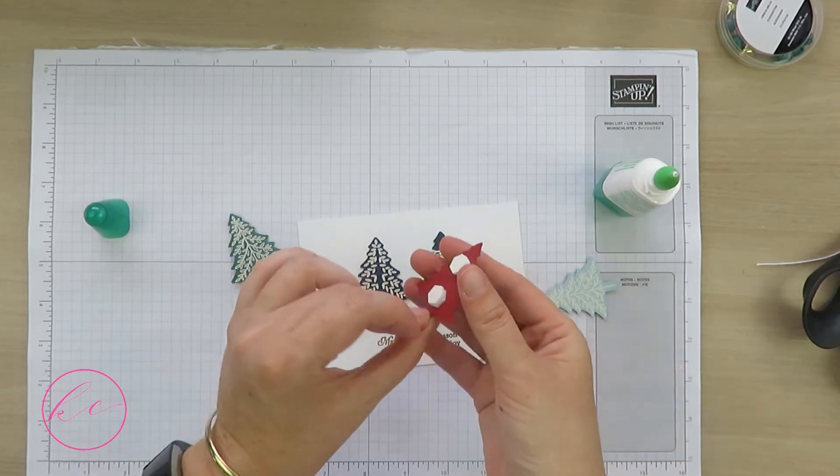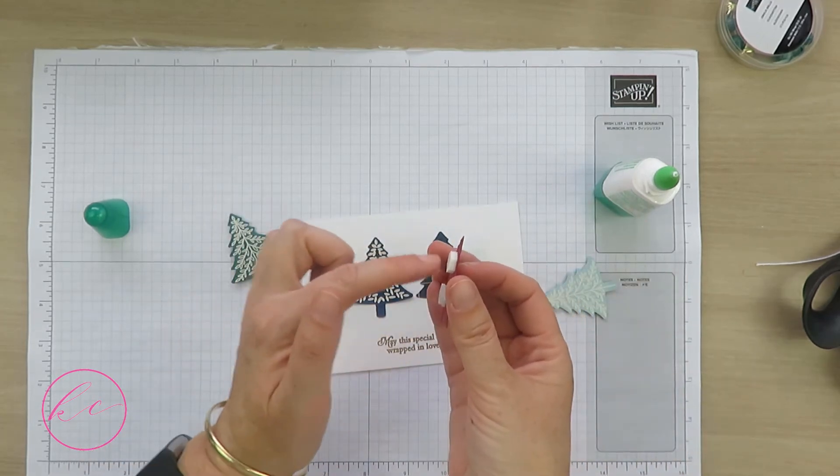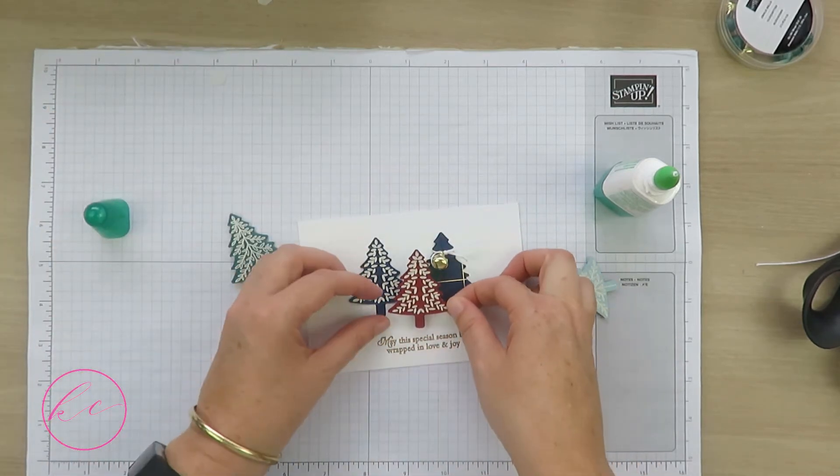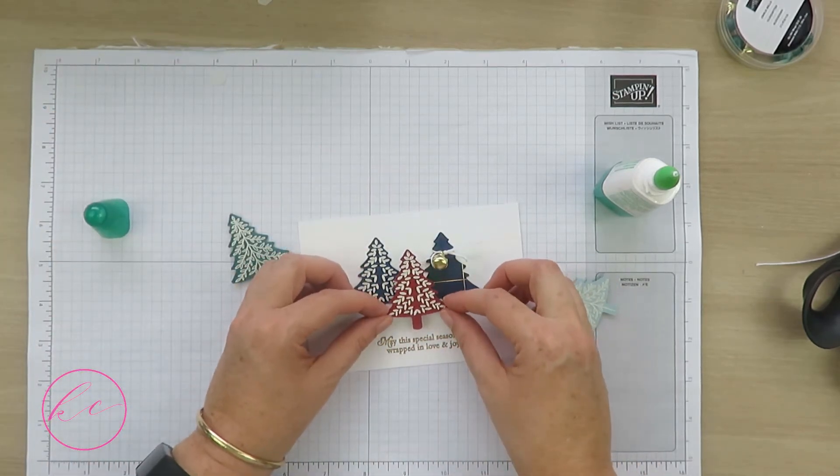Then I'm going to stick my red tree down. What I've done is I've double-stacked my dimensionals - I put one and then put another one exactly over the top of that one. We're going to stick this one right in the middle.